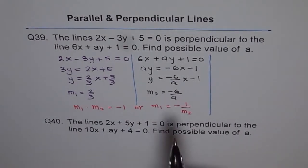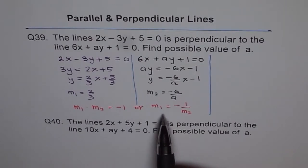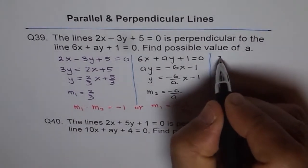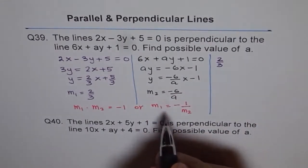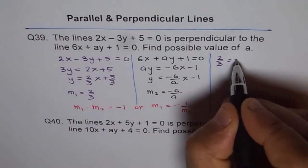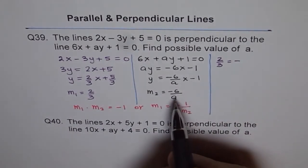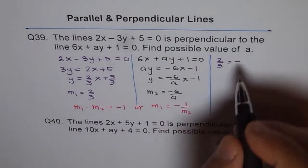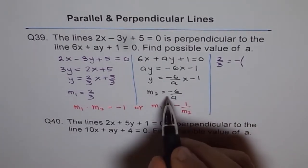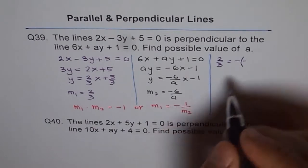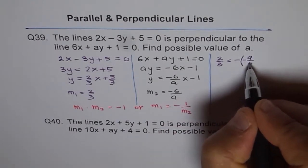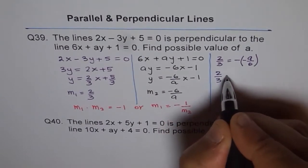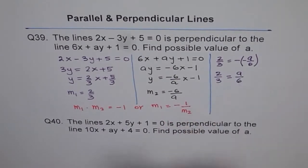I think this is better in this situation. Let's write m1 which is 2 over 3 equals negative reciprocal of m2. Let's flip it. If we flip it, then it becomes negative of this number, so negative a over 6. We have 2 over 3 should be equal to a over 6.